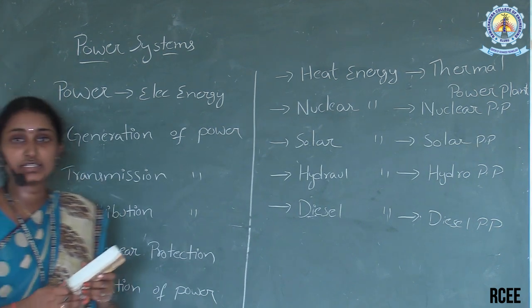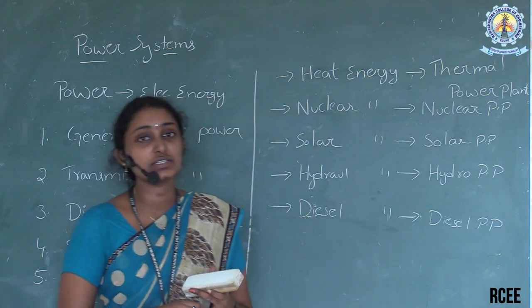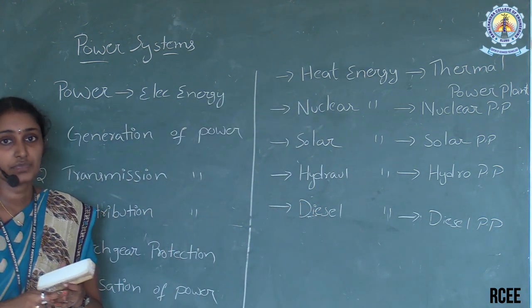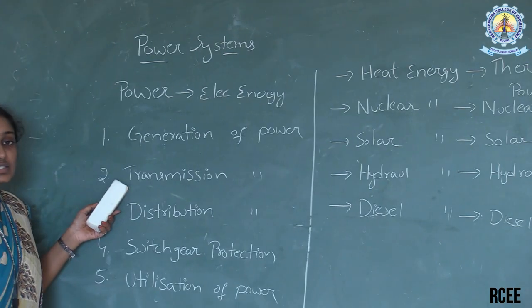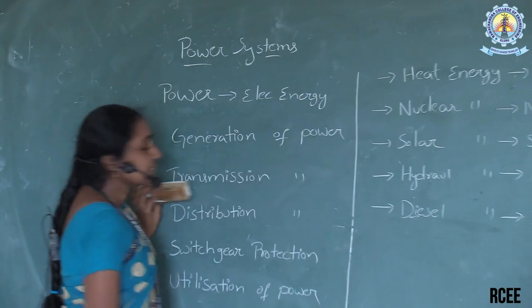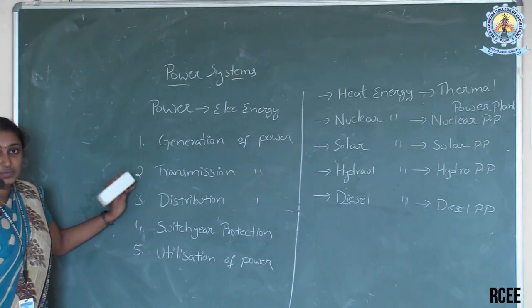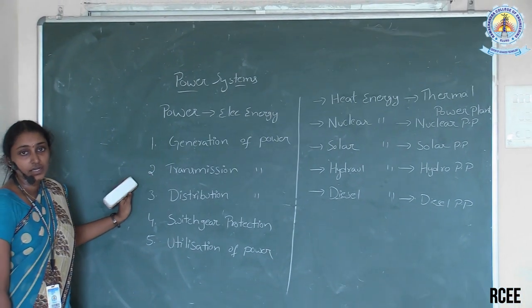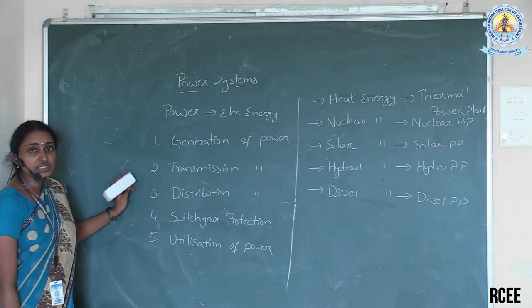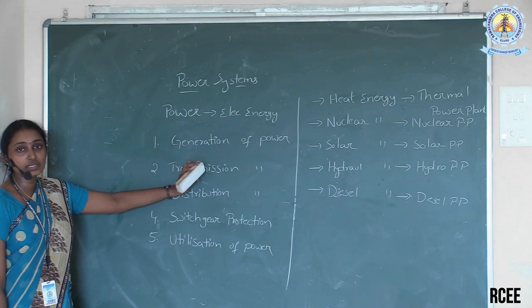Electrical energy is such an energy which can be converted into light energy, thermal energy, or mechanical energy. Next, transmission of power — in this section, we are going to know how many types the transmission system is divided. The transmission system can be classified based on the distance of overall transmission lines.